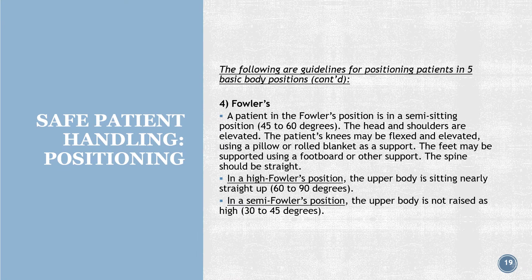Position 4 — Fowler's: a patient in the Fowler's position is in a semi-sitting position at 45 to 60 degrees. The head and shoulders are elevated; the patient's knees may be flexed and elevated using a pillow or rolled blanket for support. The feet may be supported using a foot board or other support, and the spine should be straight. In a high Fowler's position, the upper body is sitting nearly straight up at 60 to 90 degrees. In a semi-Fowler's position, the upper body is not raised as high, at 30 to 45 degrees.